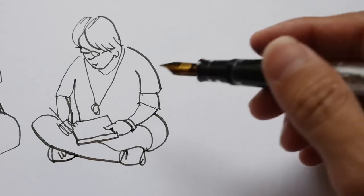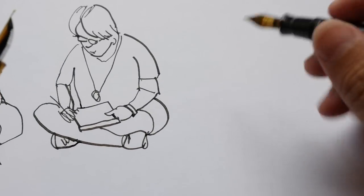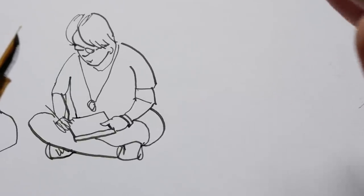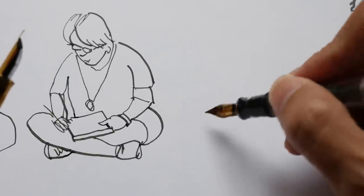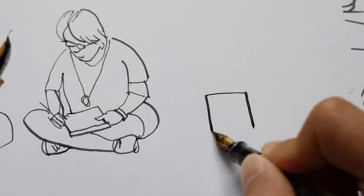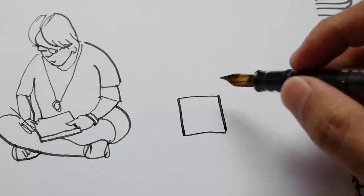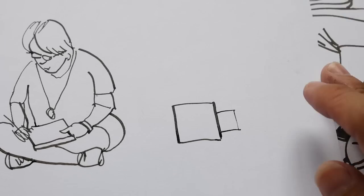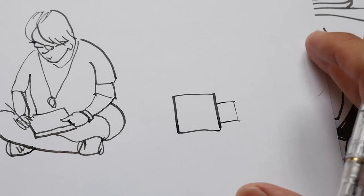Line variations also help when you're drawing objects. For example, objects nearer—you can use thicker lines for objects that are nearer. Let me just draw a box. For objects that are behind, you just use a thin line. You sort of get the idea.